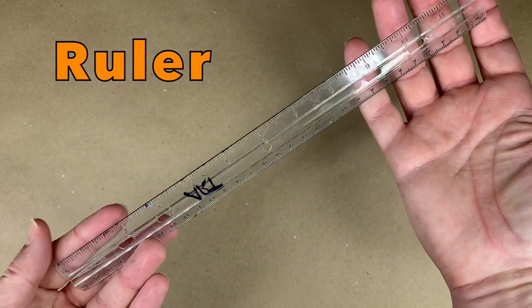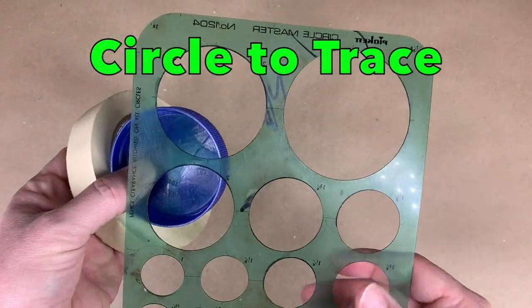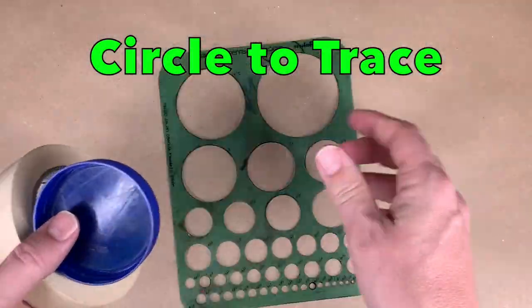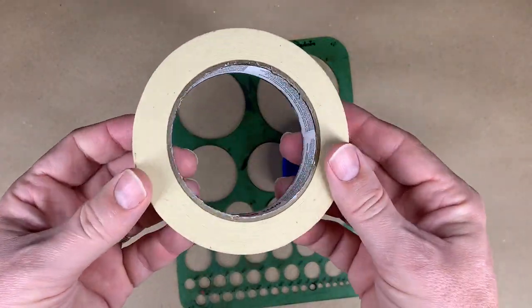A ruler for making your straight lines. Something to trace a circle with, either a circle stencil, a bottle cap, a roll of tape would even work.